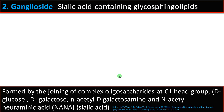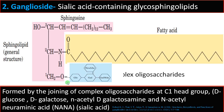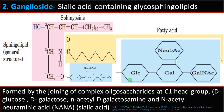Moving on to ganglioside — gangliosides are sialic acid-containing glycosphingolipids. The structure is the same: a sphingosine backbone, then to the second carbon, a fatty acid chain joined to the nitrogen by an amide bond. To the first carbon, complex oligosaccharides are joined. As you can see — let me zoom into this side chain — to the OH of the sphingosine backbone at C1: D-glucose, then D-galactose, then D-galactosamine, and neuraminic acid (sialic acid) is added, forming ganglioside.